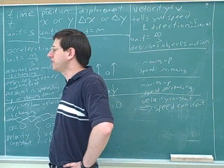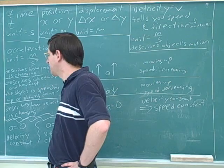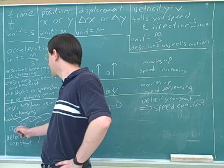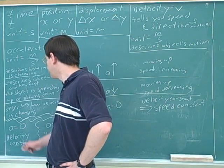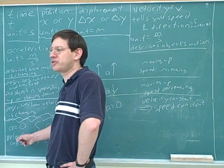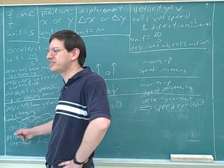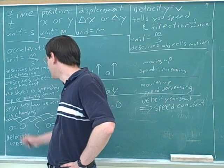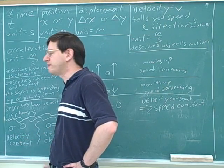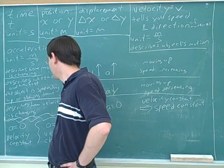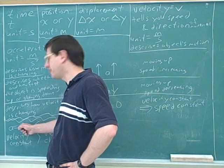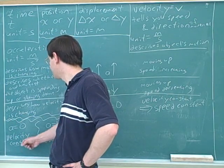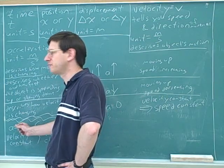The reason people get these wrong is they don't really understand the concepts and just guess. For example, very often people say if the acceleration is zero, then the velocity is zero — but that's not true. Just because acceleration is zero doesn't mean velocity is zero; it means velocity is constant. Or people do it the other way and say the velocity is constant, so the acceleration has to be constant — but it just doesn't work that way.